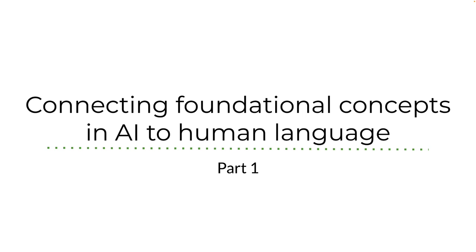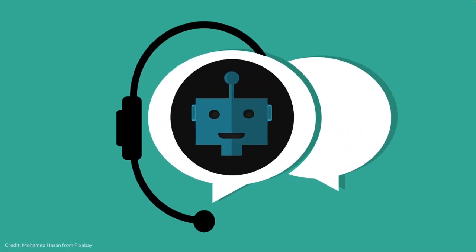I want to start by helping you understand how AI works with human language. AI is actually behind many common tools — email filters are probably one of the most basic and first AI applications. I think chatbots are one of the easiest ways to demonstrate what AI can do. There are basically two kinds of chatbots: rules-based and AI-powered. I'm going to show you each kind so you can see the difference.